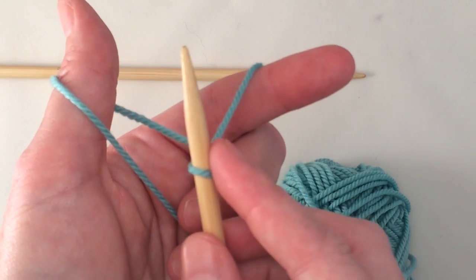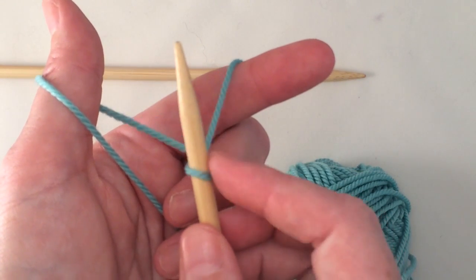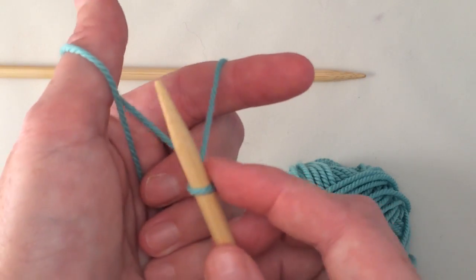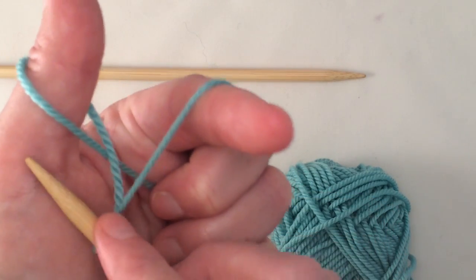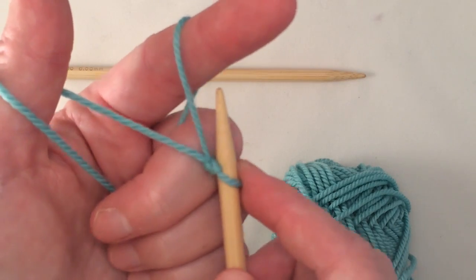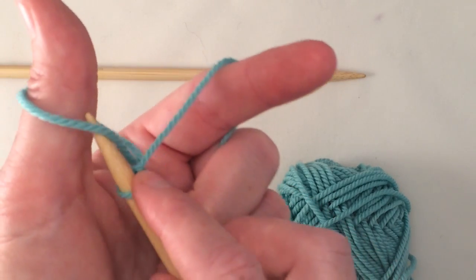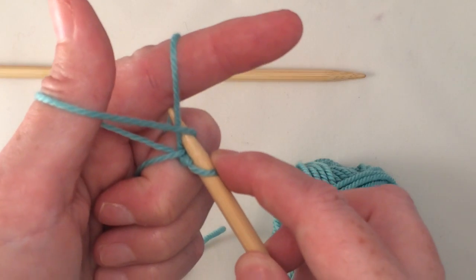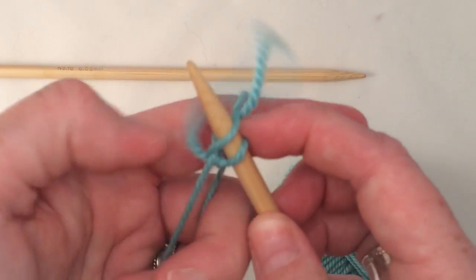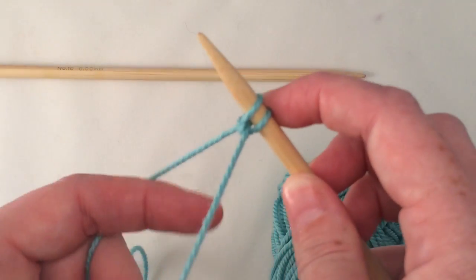And you use your right hand finger to stabilize that stitch that's on the needle. And what you're going to do is you have a loop over here and a loop that you've made here. You're going to come under the thumb loop and then go over the finger loop and draw through both. And tighten.